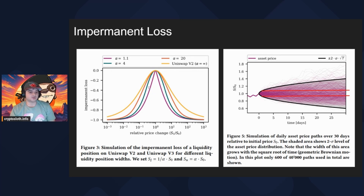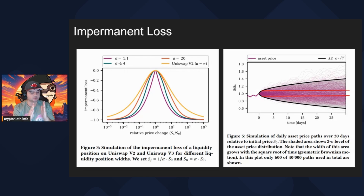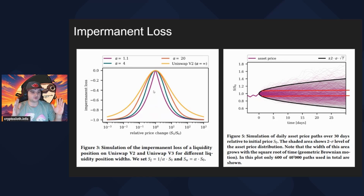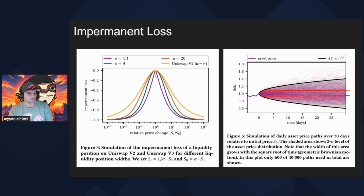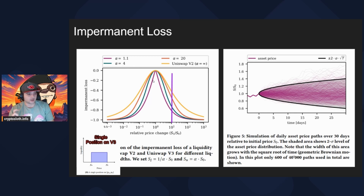The V3 positions have smaller and smaller slopes as the alpha decreases. The alpha for these three V3 lines represents the wideness of your V3 position — wider means greater alpha, narrower means lower alpha. So an alpha of 20 is like a price range of plus or minus 2X the price; alpha of 4 is like plus or minus 50%; and 1.1 is like plus or minus 10% of the current price. As you narrow your bands in a V3 position, your impermanent loss greatly increases — or rather, the rate of impermanent loss greatly increases.